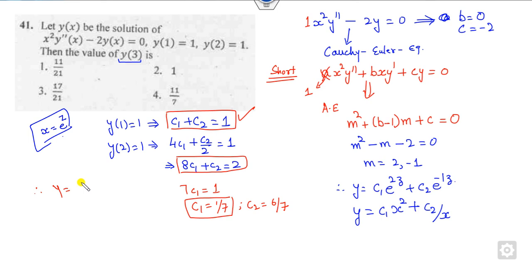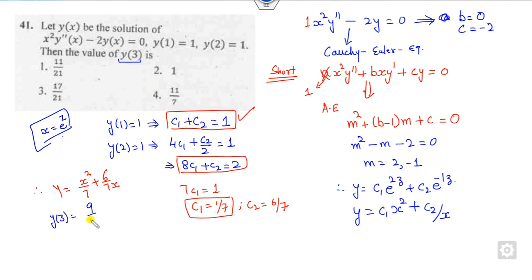Therefore, y = x²/7 + (6/7)(1/x). Now to find y(3): substituting x = 3 gives 9/7 + 2/7, which equals 11/7. That is the correct answer.